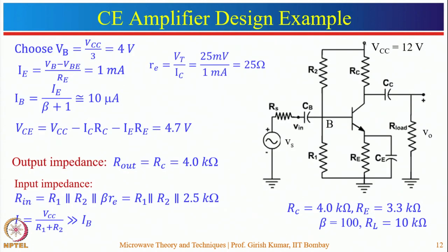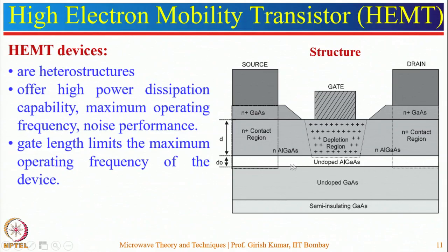Comparing FETs with BJTs: FETs occupy relatively less area and are more suitable for IC integration. They do not suffer minority carrier effects and have a negative temperature coefficient, so they do not suffer thermal runaway. The input impedance of FETs is of the order of megaohms, whereas for BJTs it is of the order of kilohms.